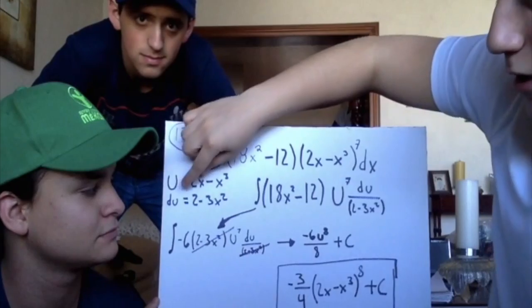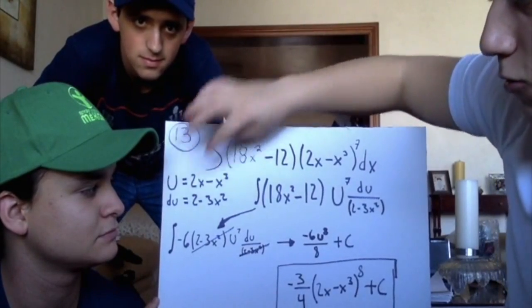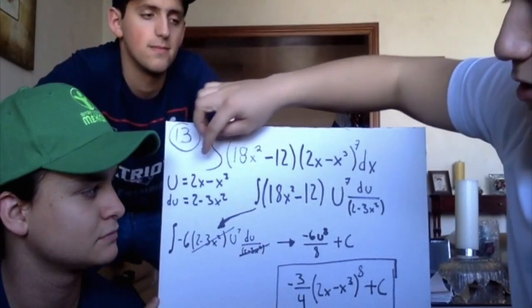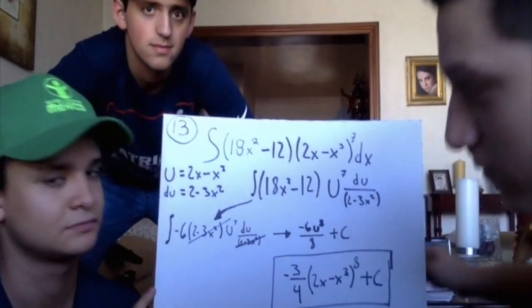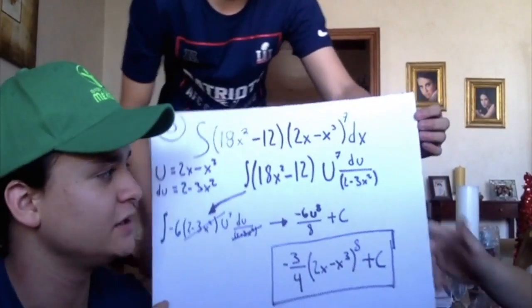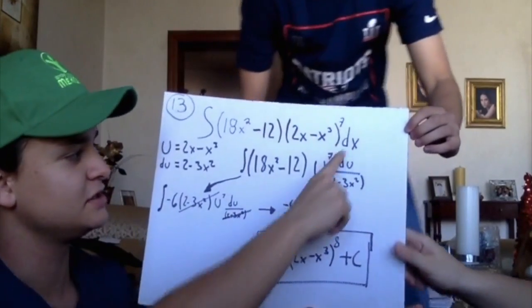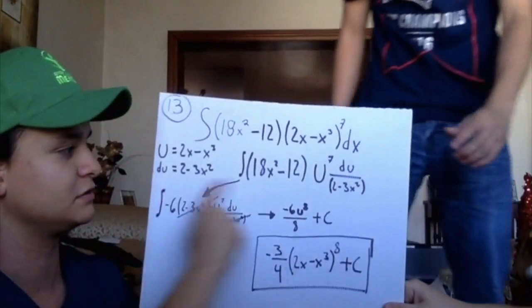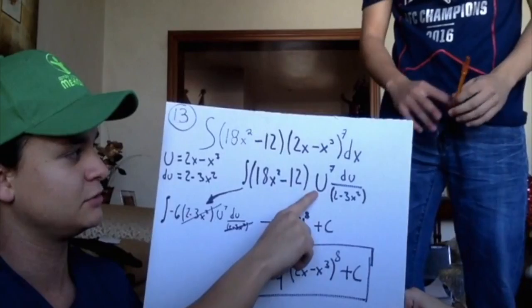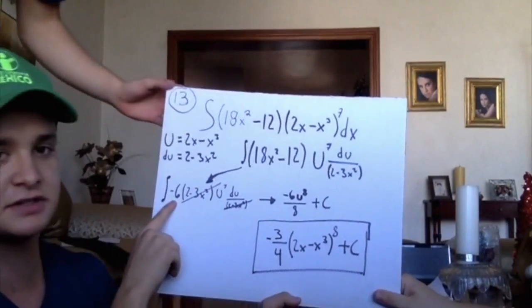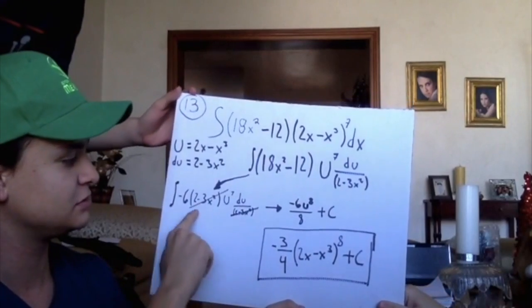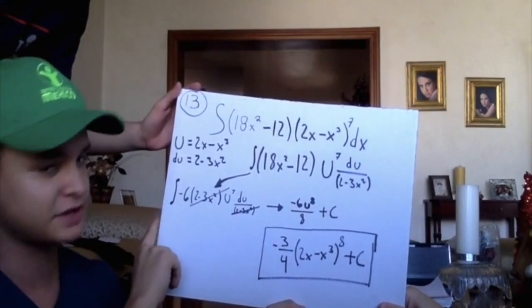So our u will be 2x minus x cubed. And our du will be 2 minus 3x squared, which is the derivative of this term. So then we substitute dx with our du, and we replace our u term with just a u. Then we take out the negative 6, so we can cancel the like terms.